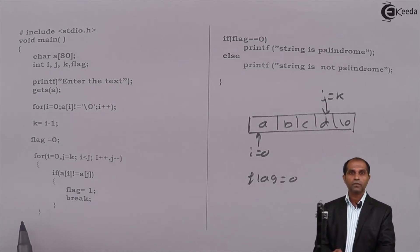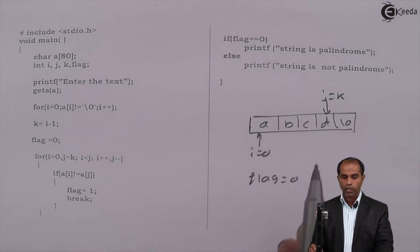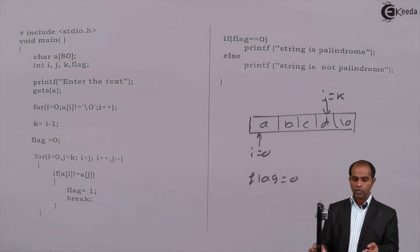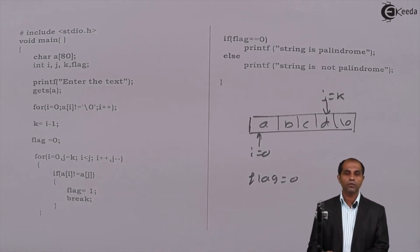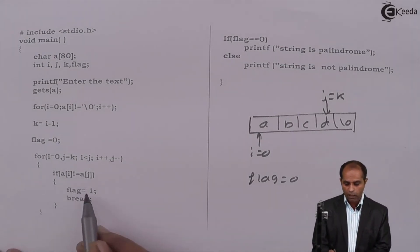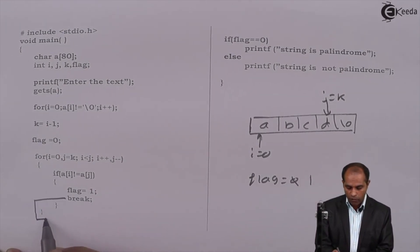Check: is a[i] not equal to a[j]? Yes, a[i] is not equal to a[j]. If a[i] is not equal to a[j], then what you need to do? Enter in this particular part, set flag as 1, and then break will take you outside this particular for loop.